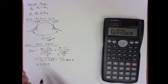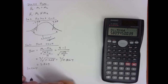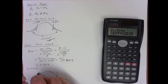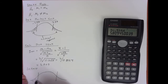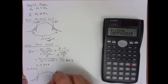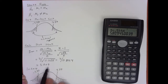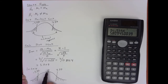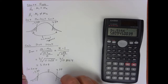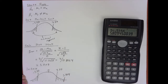We sketch our distribution, shade our critical regions, and mark critical values of 3.77 and negative 3.77. Our test statistic of 5.8 falls to the right — outside of the range between negative 3.77 and 3.77 — so it falls inside our critical region. Therefore we reject the null hypothesis for this comparison.